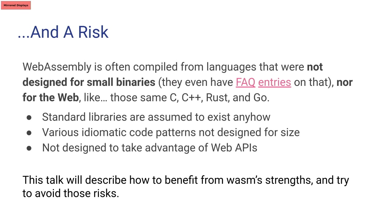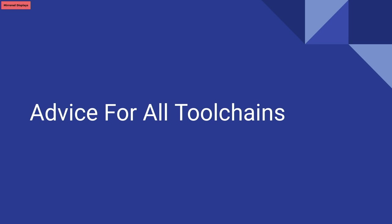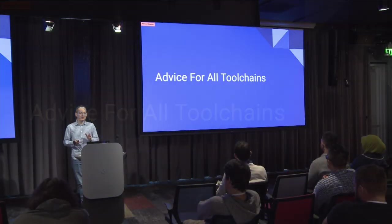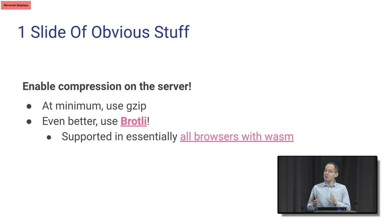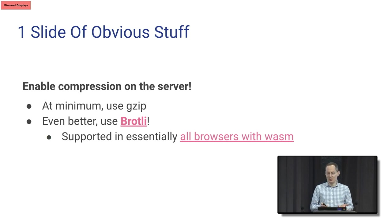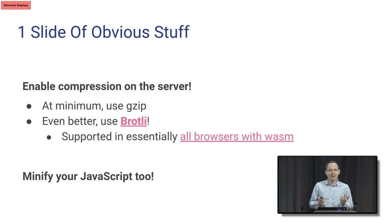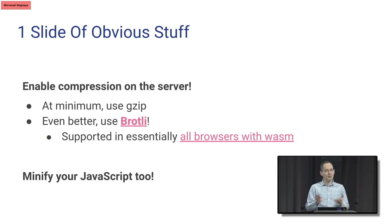In this talk I'll explain how to benefit from the good things and try to avoid the bad things. Let's start with advice for all tool chains — general stuff. Enable compression on the server. At minimum use gzip; even better, use Brotli. Brotli is supported in practically all browsers that support WebAssembly. And don't forget to minify your JavaScript, at least on the web — you'll generally have a bunch of JavaScript just to load the WebAssembly and interface with Web APIs, and that's also code you want to optimize.